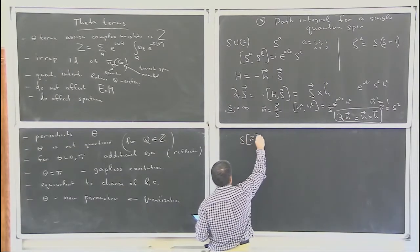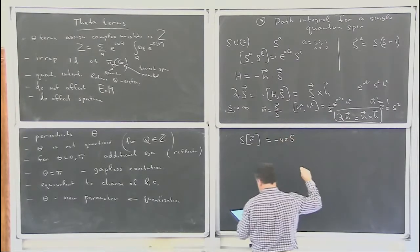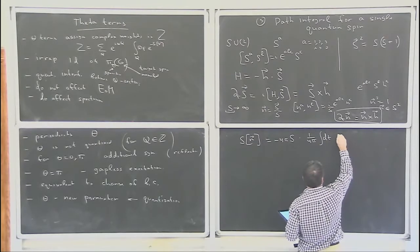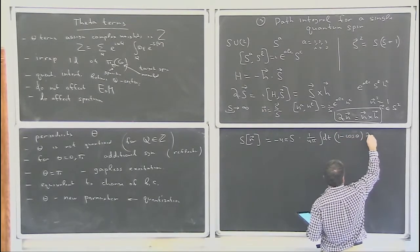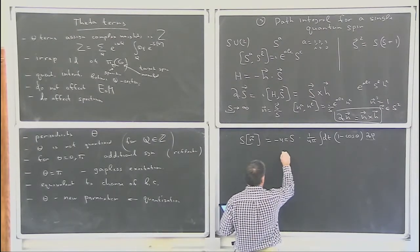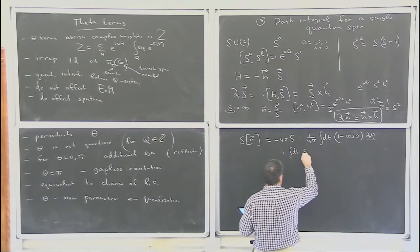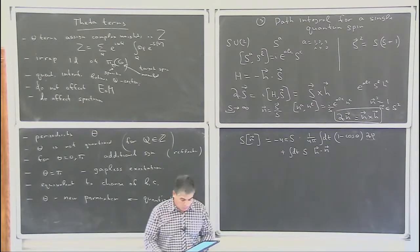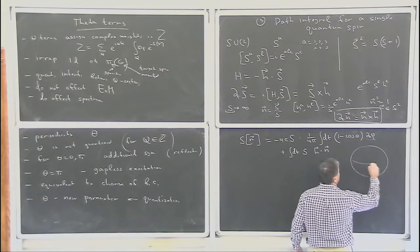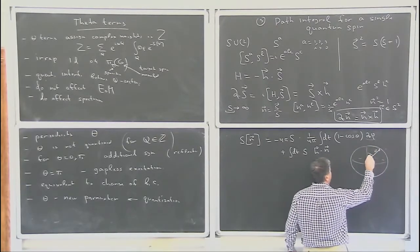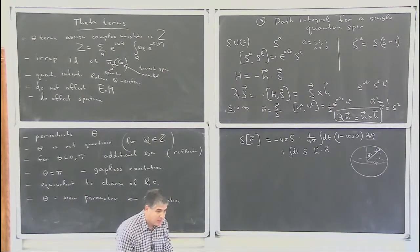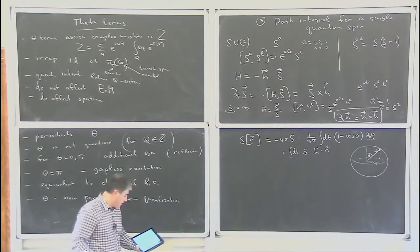Let me write the answer. The action is S[N] = -4 pi S times (1/4pi) integral dt (1 - cos theta) d_t phi, plus integral dt S H dot N. Here I use spherical coordinates: the vector N is characterized by polar angle theta and azimuthal angle phi. The second term is easily recognized as minus the integral of the Hamiltonian. The first term should be thought of as the p q-dot term — this is a phase space version of the action.